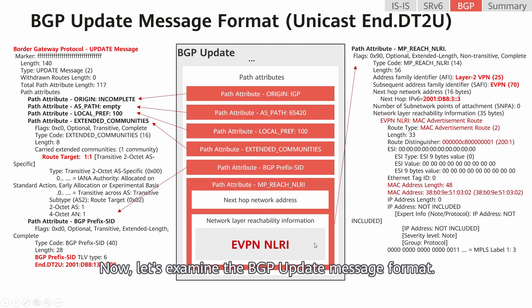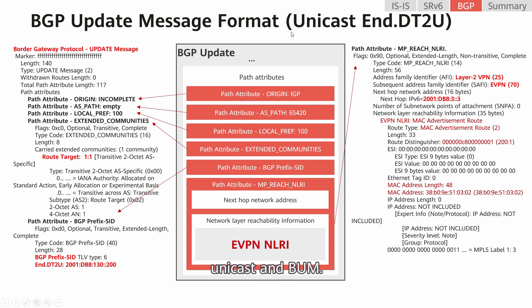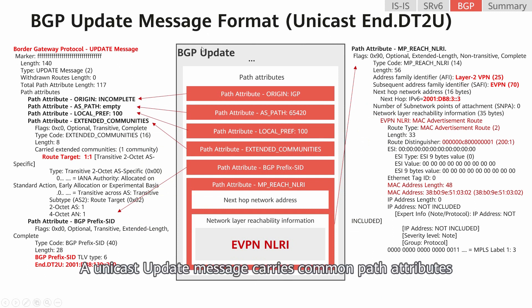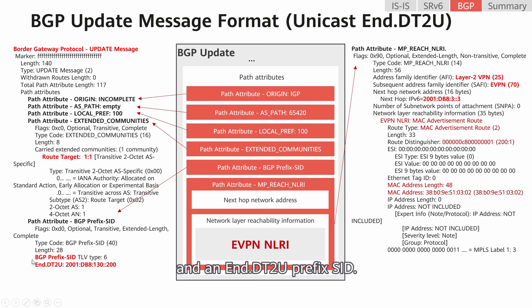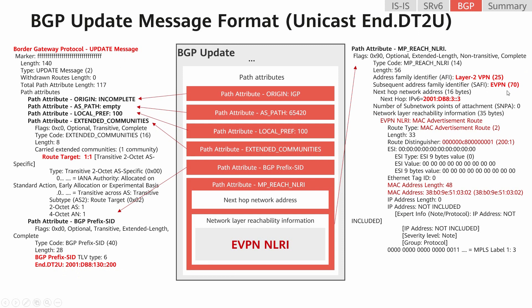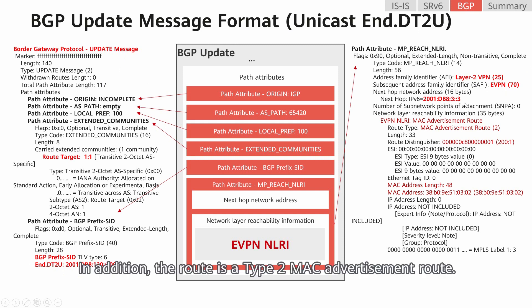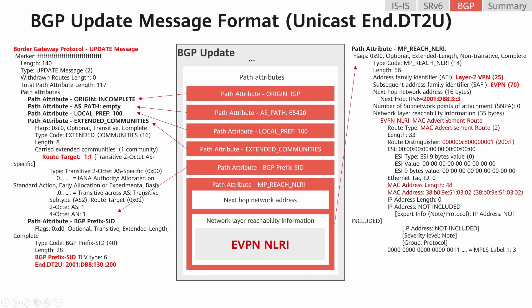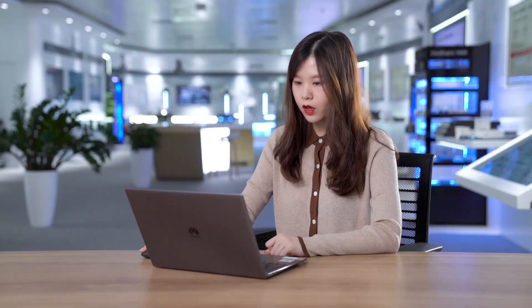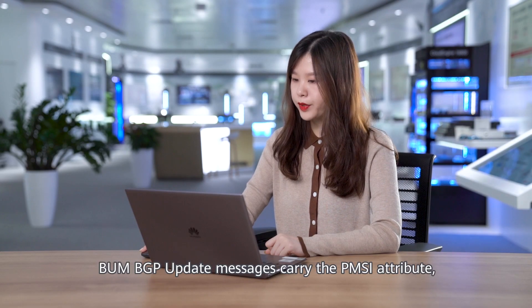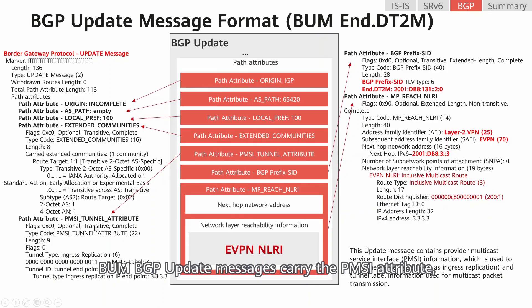Now let's examine the BGP update message format. The EVPN-VPLS scenario involves two types of update messages: unicast and BUM. A unicast update message carries common path attributes and an End.DT2U prefix SID. The EVPN NLRI shows that the main address family identifier is L2VPN, the sub-address family identifier is EVPN, and the next-hop is the address of PE2. In addition, the route is a type 2 MAC advertisement route carrying an RD and CE2's MAC address.